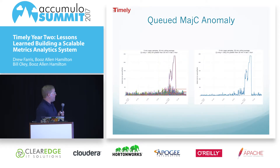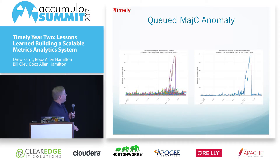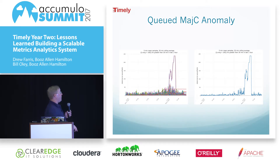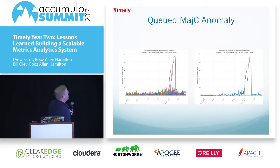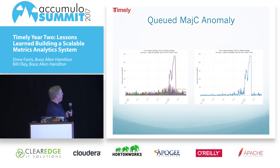Here's an anomalous condition that came up while I was doing slides. This is a queued major compaction that instead of hitting 40 or 50 as in the last one, hit 250 for over 30 minutes. The average went over 100 for greater than 30 minutes within the last hour, and it sent out an alert.